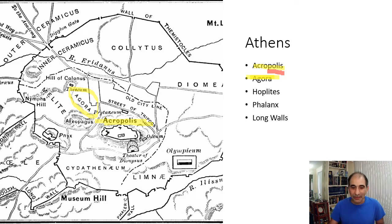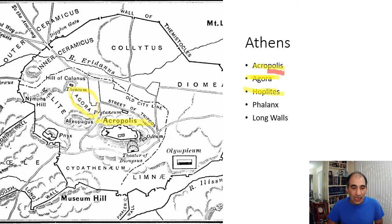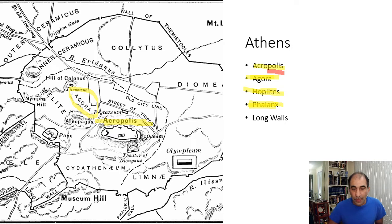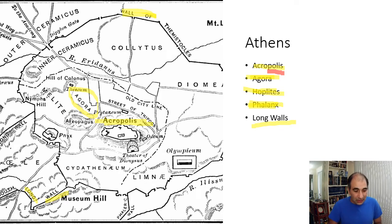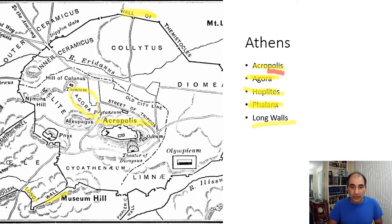All Greek city-states had an agora. Another thing they had in common: their Greek soldiers are all called hoplites — it doesn't matter if you're in Athens or Sparta. They're called that because they used a round wooden shield called a hoplon shield, and from there you get hoplites. If you get a whole bunch of hoplites together, you get a phalanx. Another thing most Greek city-states had are long walls — you can see them on this map — which were defensive, indicating these city-states were pretty militaristic.